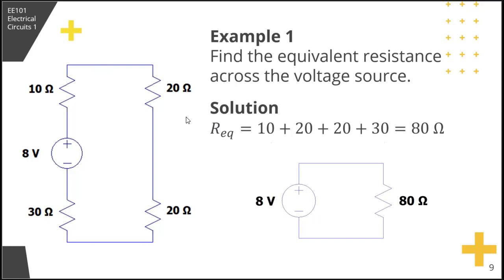That's 10 plus 20 plus 20 plus 30, so that is 80 ohm. This circuit can be simplified to be this circuit.